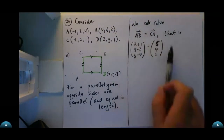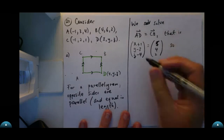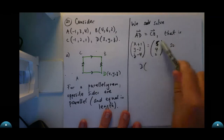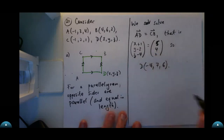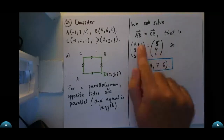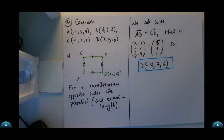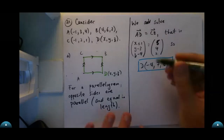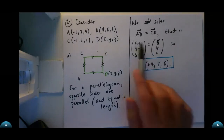So D: X is going to be positive 4 — thank you Brendan, good spotting, don't make the mistake I did. Y is going to be 7, and Z is going to be 6. When you solve these kinds of vector equations, it's just like a system of equations — a linear system — you just solve component-wise.